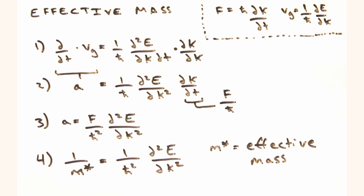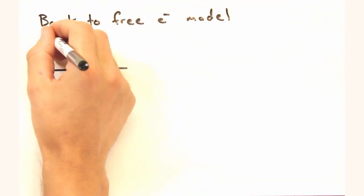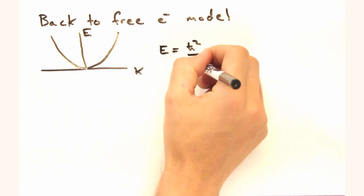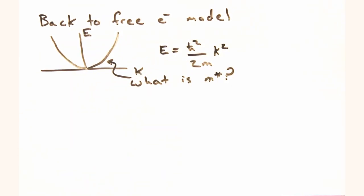Ah, okay. So let's go back to the free electron model for a moment. Does this approach give us that the effective mass is the rest mass of the electron? I think I'd feel better about this if it did.